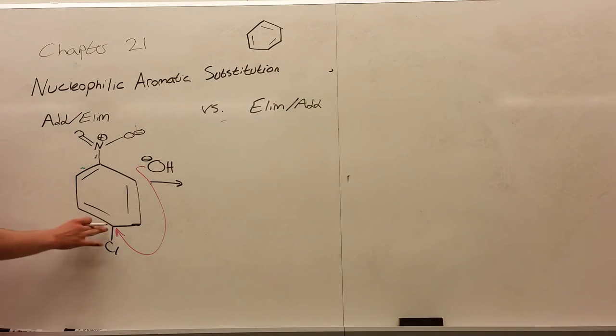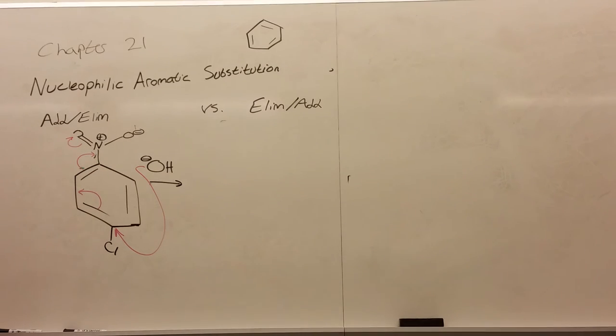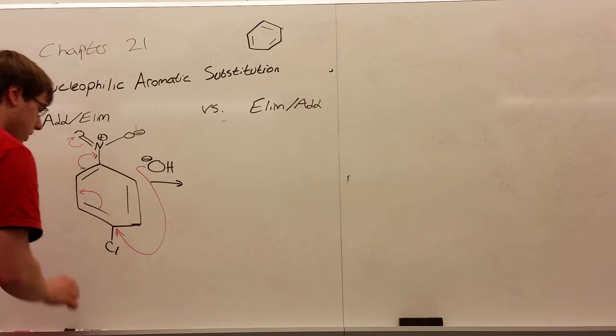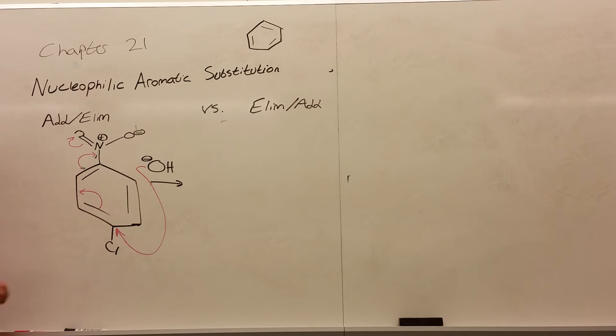And now, because this carbon can resonate up with the nitrogen, meaning this swings down like this, this swings up to the nitrogen, and this swings up, this reaction is allowed to happen. If the chlorine was here or here, the meta positions to that nitrogen, you would not be able to add because these double bonds would no longer be able to resonate into the nitrogen.